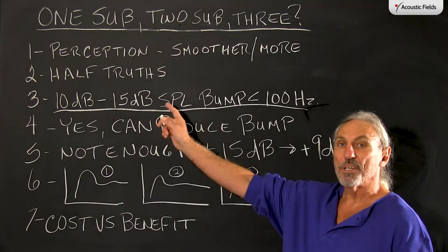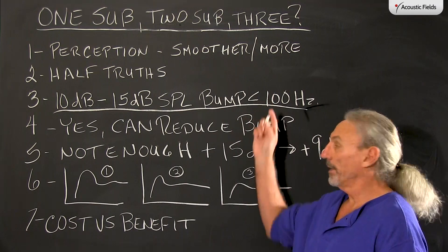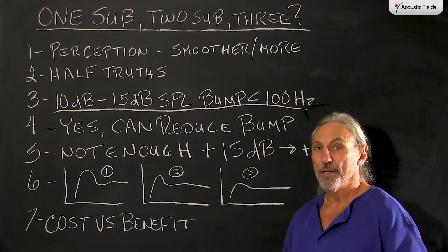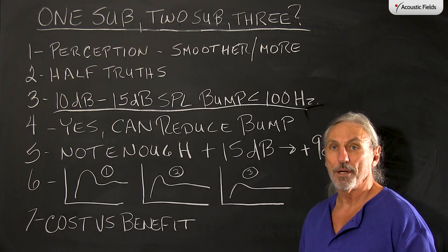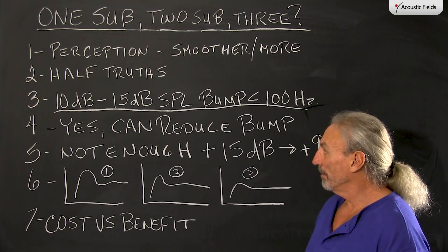Most show a 10 to a 15 dB bump less than 100 cycles. Standard characteristic, standard bell-shaped curve for low frequencies in small rooms.